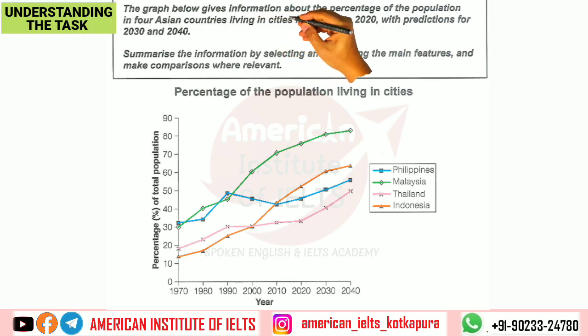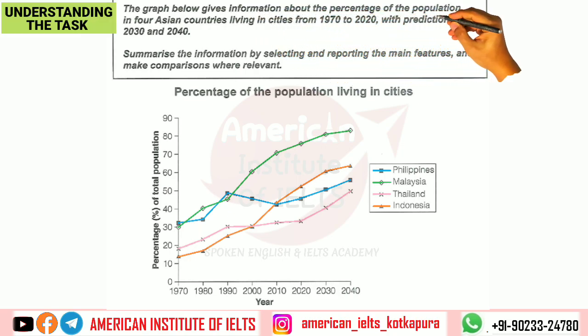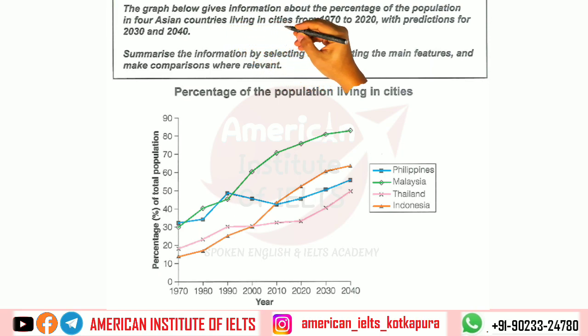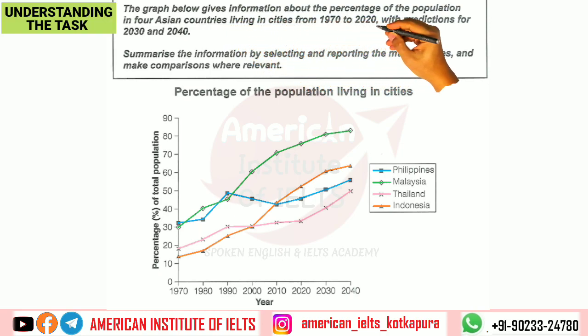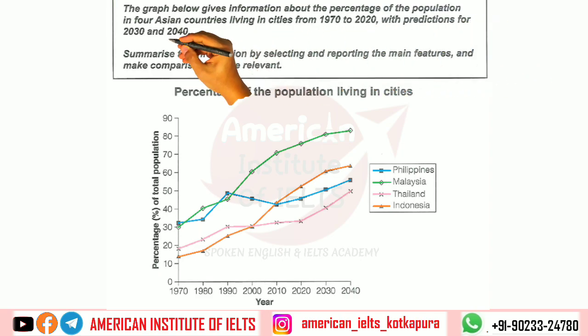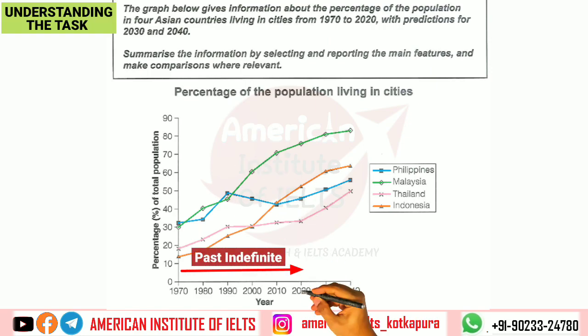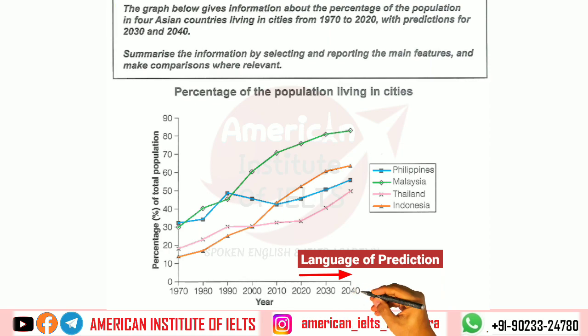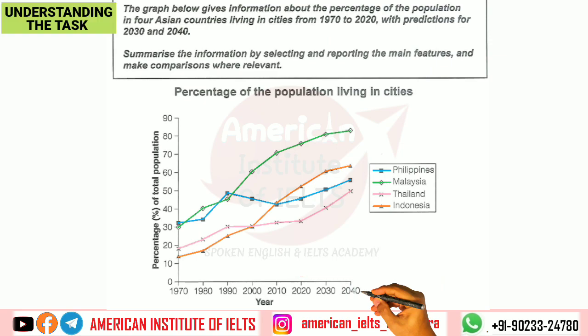We can also go through the introduction statement of the task: 'The graph below gives information about the percentage of the population in four Asian countries living in cities from 1970 to 2020, with predictions for 2030 and 2040.' So we need to explain the task up to 2020 in past tense, and for 2030 and 2040 we will use the language of prediction. With this we have understood each and everything.